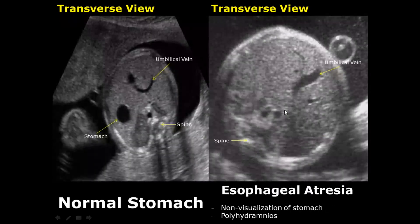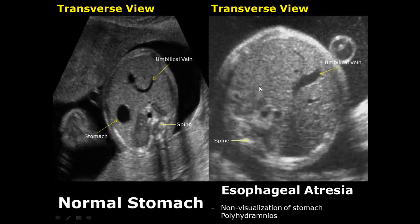Esophageal atresia is a birth defect in which the esophagus does not develop properly, leading to obstruction at the level of the esophagus. Due to this obstruction, the stomach does not fill with amniotic fluid, and we may not even see the stomach. This condition is usually associated with polyhydramnios, because improper swallowing of amniotic fluid leads to a large accumulation of amniotic fluid around the fetus.